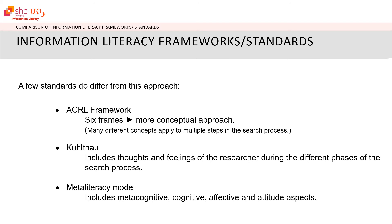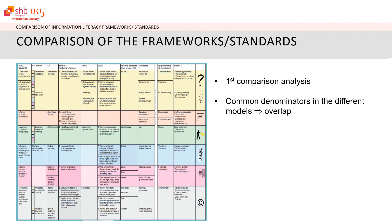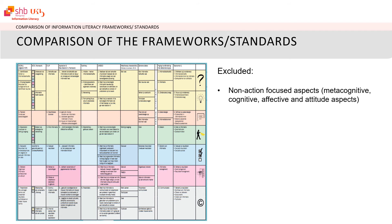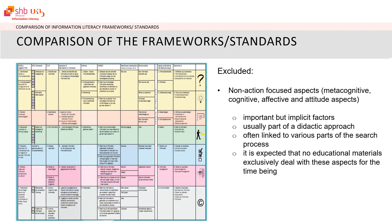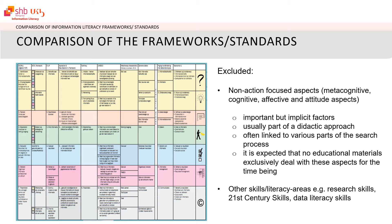Models can therefore not be fully compared. Nevertheless, we made the comparison and looked at the overlap, but we left out meta-cognitive, cognitive, affective, and attitude aspects. The main reason is that they are important but implicit factors, often part of the didactic approach and part of different stages of the search process. Other skills and literacy areas we did not include are, for example, research skills, 21st-century skills, and data literacy skills.